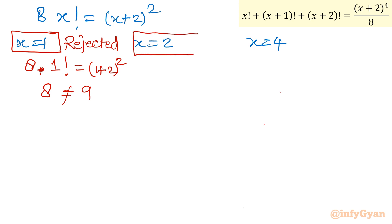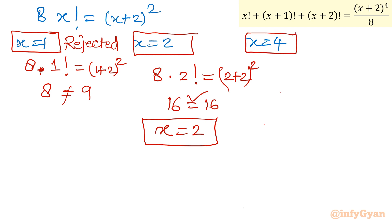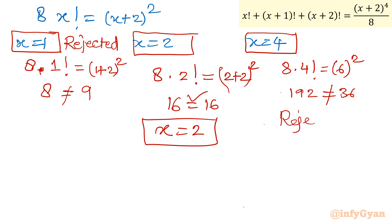For x=4: LHS = 8×4! = 8×24 = 192, RHS = (4+2)^2 = 36. Not equal, so x=4 is also rejected. Summarizing: x=1 is rejected, x=4 is rejected, and x=2 is the accepted solution.